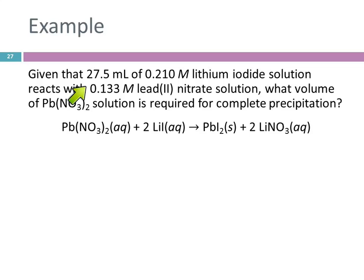So, 27.3 milliliters of lithium iodide. Which of these guys is lithium iodide? The second one, right? It looks like LIL, but that's LI, capital I. So, 27.5 is the volume of that. So, 27.5 milliliters of 0.210 molar lithium iodide. So, that's the concentration. 0.210 moles per liter. Okay? Moles per liter.